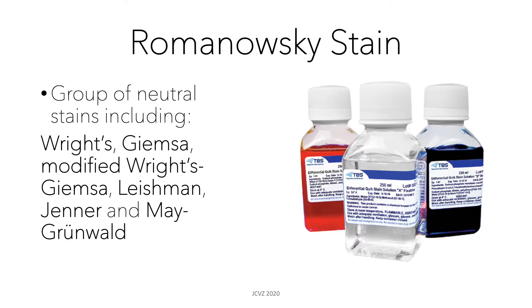The most commonly used stains for blood cells are what are known as Romanovsky stains. These are a group of neutral stains which include the following: Wright stain, Wright-Giemsa stain, Leishman-Jenner, and May-Grünwald stains.